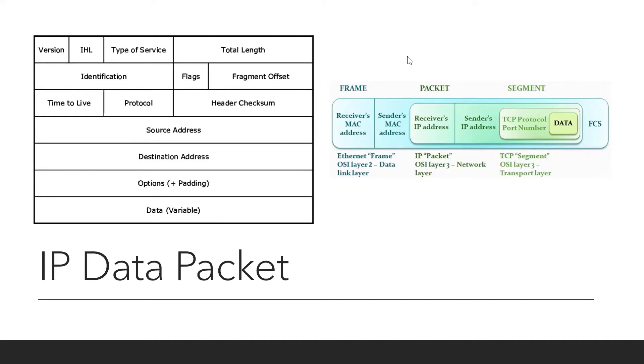You have the sender's and receiver's IP addresses. When the packet goes down to the data link layer, the sender's MAC address and receiver's MAC address are also added.